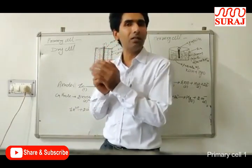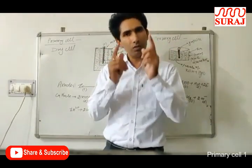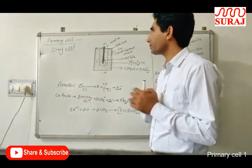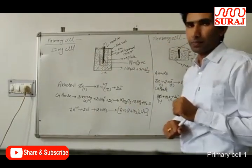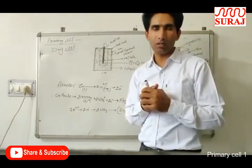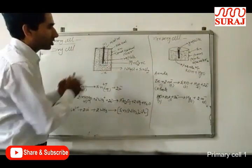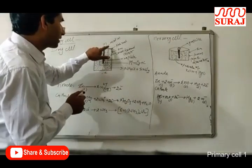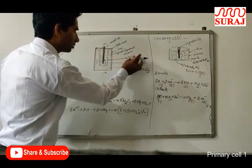Primary cells are cells which cannot be recharged — the redox reaction takes place only once. There are two types of primary cells we will discuss: first is the dry cell, and second is the mercury cell, also called the button cell, which we generally use in hearing aids and watches. Here is the construction of the dry cell: we have a metal cap and a graphite electrode.